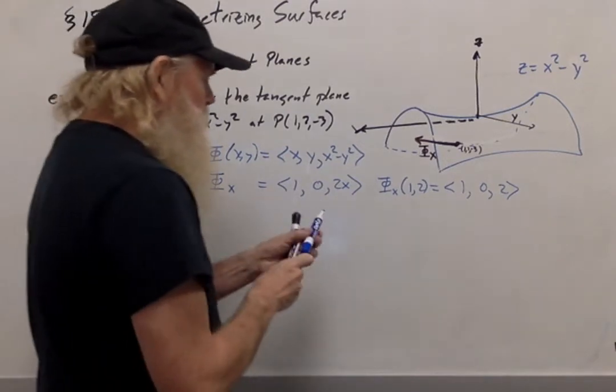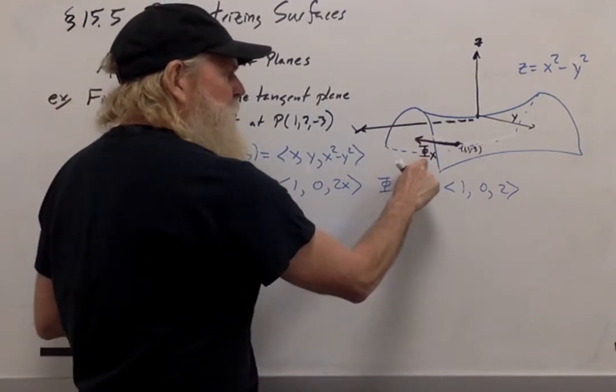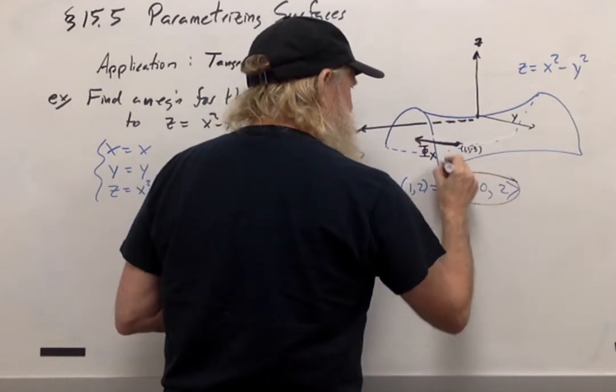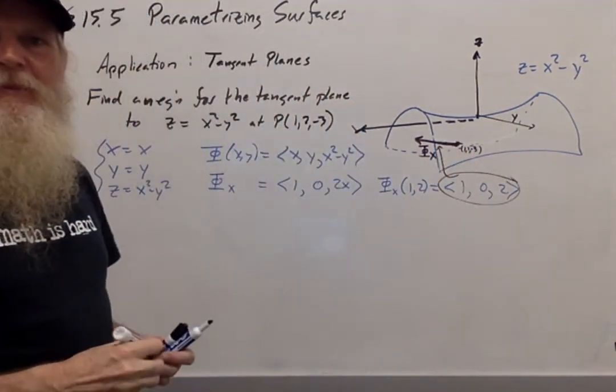And 1, 0, 2 are the components of d phi dx right here. So this is that vector.